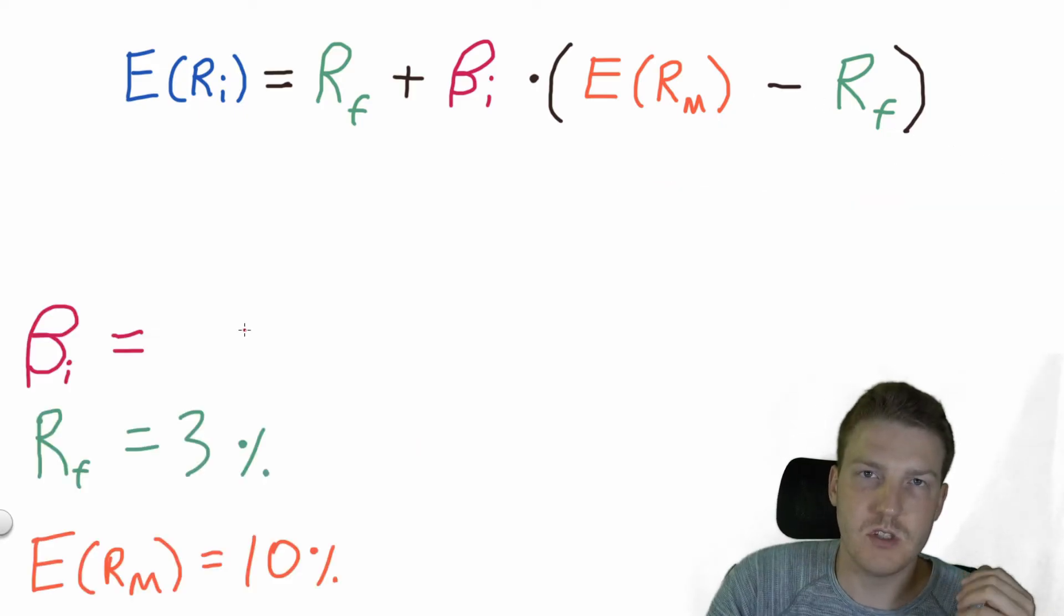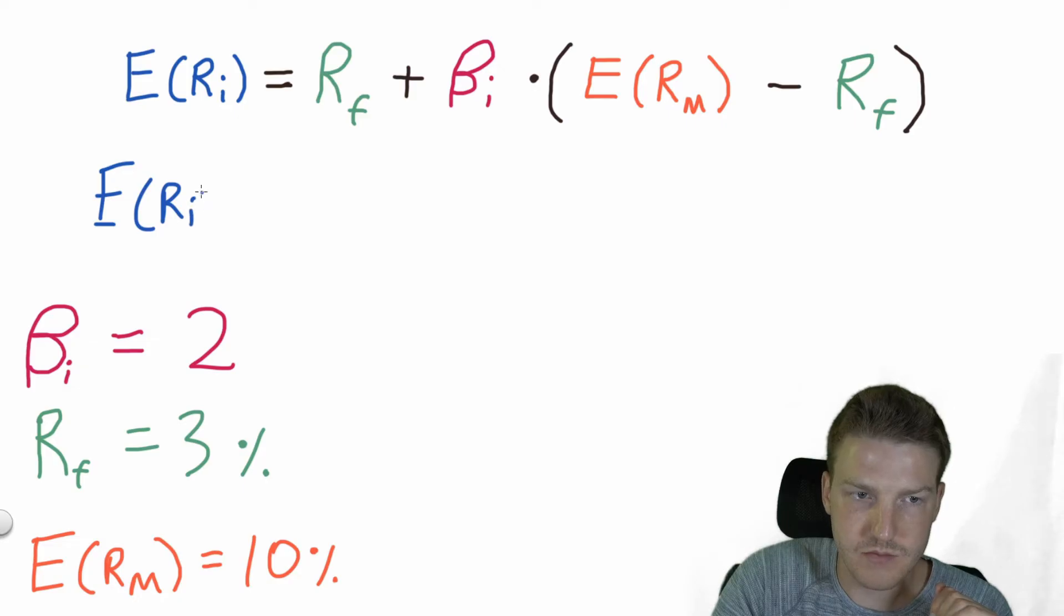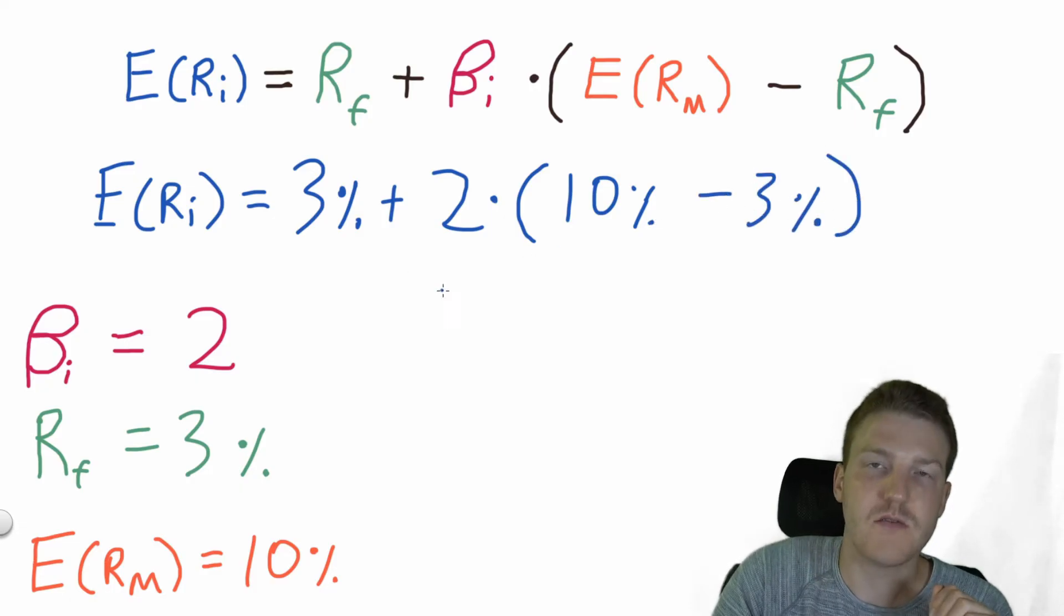Now let's solve this formula twice with a beta that's higher than 1 and a beta that is lower than 1. So let's say that the beta of asset I is 2. So this is a very risky asset to have a beta that high. So we're going to say the expected return of asset I is equal to our risk-free rate of 3% plus our beta of 2 multiplied by our market risk premium, which is 10% minus 3%. So this gives us a total expected return of 17%.